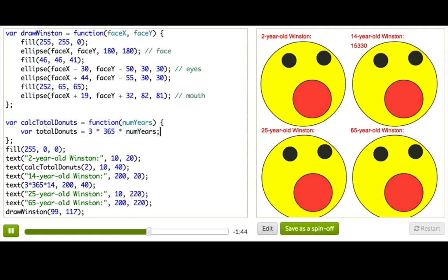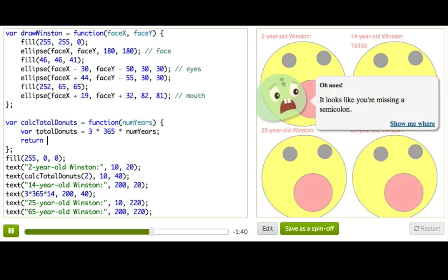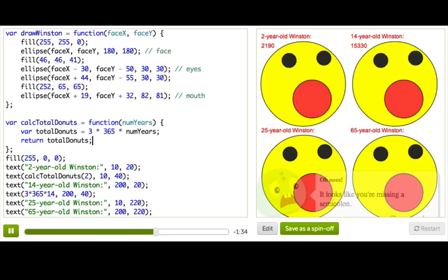So for a function to return a value, we need to type return, and then whatever it wants to return. Maybe it's a variable or a value or an expression. So here we'll say return total donuts. Okay, so whoever's calling that function is going to get this response. And now our value displays. Yay!